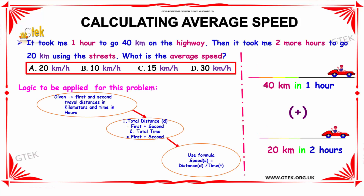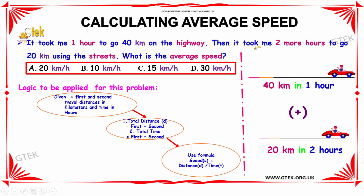The next question is: it took me 1 hour to go 40 km on the highway, then it took me 2 more hours to go 20 km using the streets. The question is, what is the average speed?